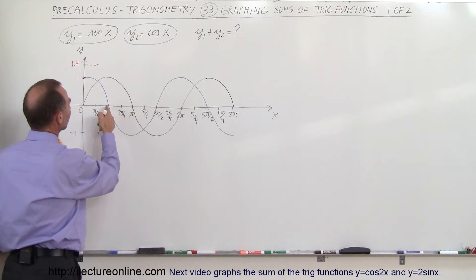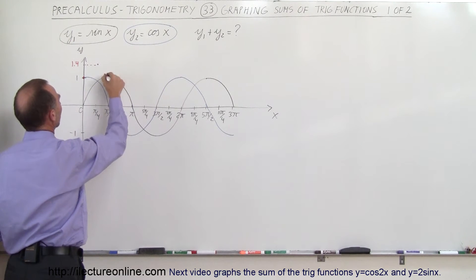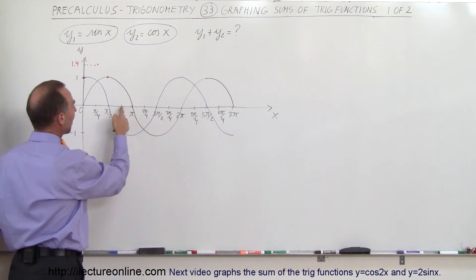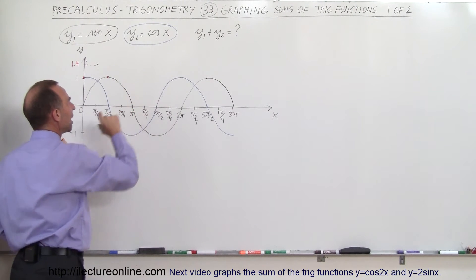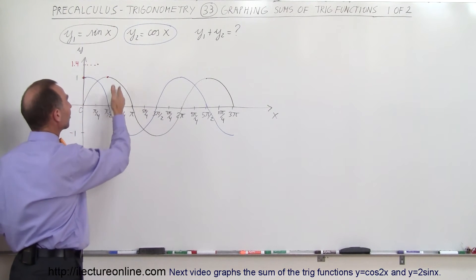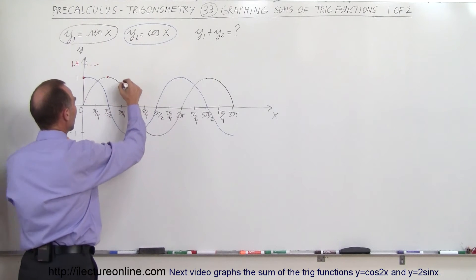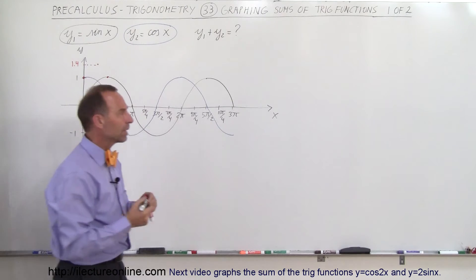At pi over 2, at 90 degrees, you can see that the cosine is 0 and the sine is 1, so we're back over to this point right there. At 3 pi over 4, notice that the sine is plus 0.7 and the cosine is minus 0.7. They have the same value, but the cosine is negative and the sine is positive. So that means that when I add these together, I get a 0 value.